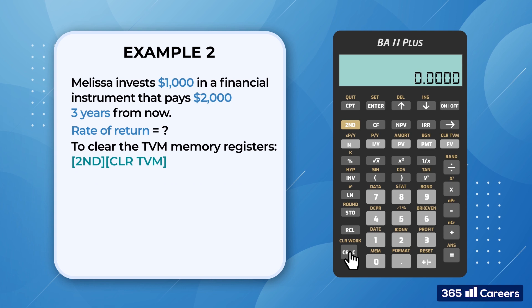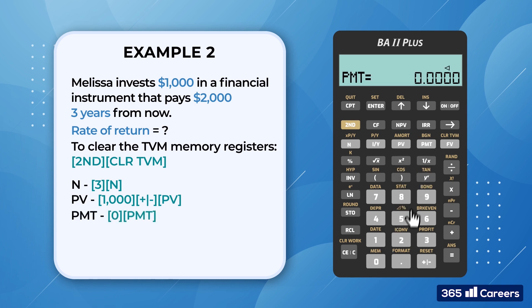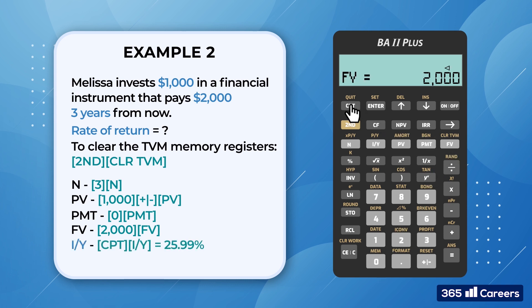As we did earlier, we'll start with the number of periods, which equals 3. The present value, PV, is minus $1,000 because it's a cash outflow for Melissa. We can easily change the sign of any number by pressing the plus/minus key. There aren't any interim payments, so PMT equals $0. The future value, FV, is $2,000. We compute for the interest rate per year, I/Y, to obtain 25.99%.